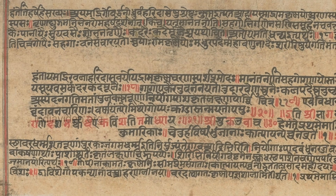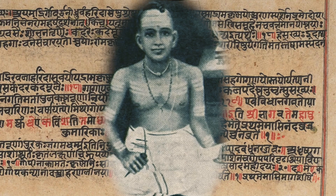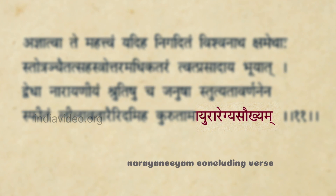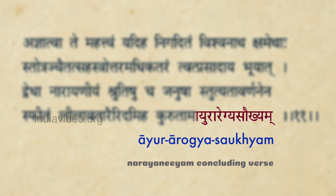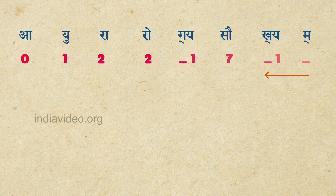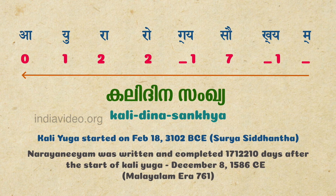Another fascinating example of the use of Kattapayadi comes from the Narayaniyam, a famous devotional hymn in Sanskrit written by the celebrated mathematician and linguist Melpathur Narayana Bhattatiri in the 16th century. The hymn concludes with the words 'Aayur Aarogyasaukyam.' Taken literally, these words are a promise of longevity, health, and happiness that one would inherit in life. Interestingly, applying Kattapayadi to these words establishes the day on which Melpathur completed the Narayaniyam — it represents the Kalidina Sankhya, which is the number of days since the start of the Kali Yuga as per the Malayalam calendar, a parameter used in Kerala for centuries in astrology and astronomy.